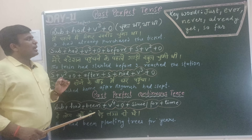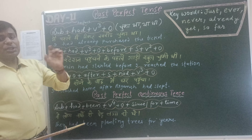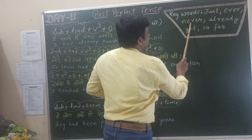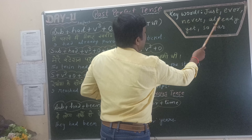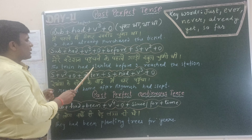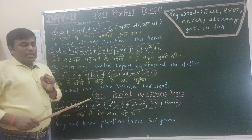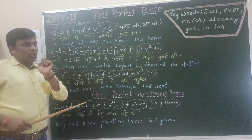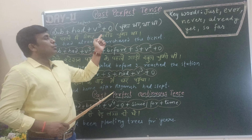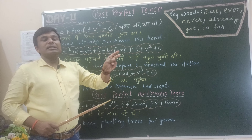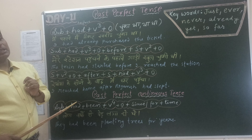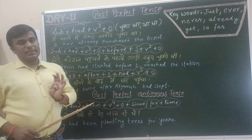One important thing to note: past perfect tense requires some condition word — like just, ever, never, already, yet, so far, before, after, or when. If there is no such condition, the sentence is made using past indefinite tense instead. For example, वह बाजार गया था — simply he went to the market.